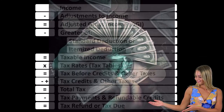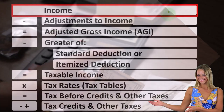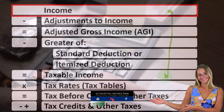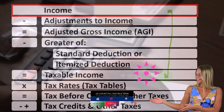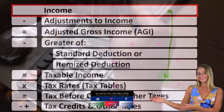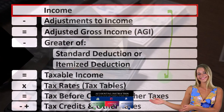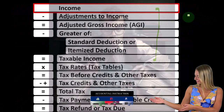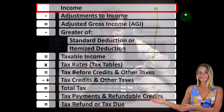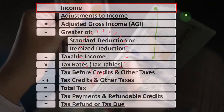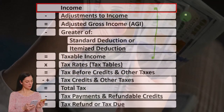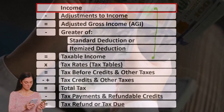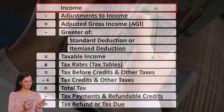Looking at the income tax formula, we're focused on line one income. The first half of the income tax formula is, in essence, an income statement — just an outline or scaffolding with other forms and schedules flowing into these lines. The Schedule C is one of them, being, in essence, an income statement in and of itself: income minus expenses or business deductions, the net income of which flows into line one income of our income tax formula.